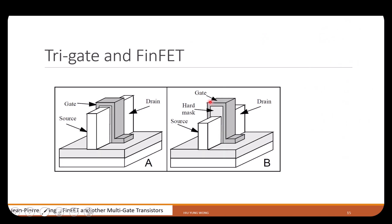Now we want to talk about a new type of transistor which was used at 22 nanometer and beyond, first by Intel. Look at the wafer — what we do is put the silicon as a fin, just like the fin of a fish. This is source, this is drain, and this is the fin. This is the transistor itself. To turn it on and off, we wrap it with the gate. If the oxide has the same thickness everywhere, it looks like you have three gates — that's called tri-gate.